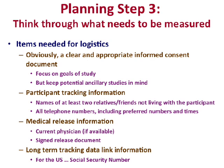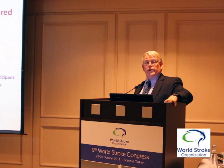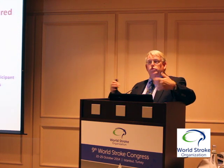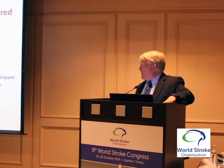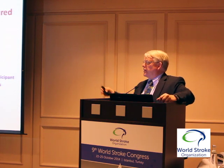You'll need participant tracking information — names and phone numbers of relatives and friends not living with participants. Plan for medical release information, including having participants sign a release for medical records in advance, which is particularly important if the person has a fatal stroke. For long-term tracking, think through what information you need to link to national databases.